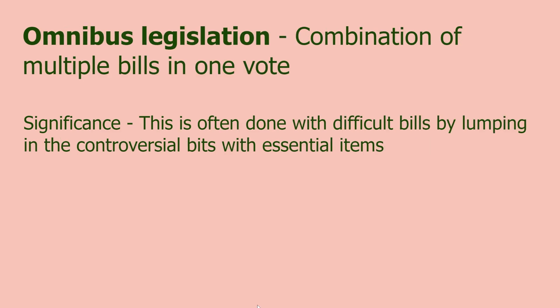Omnibus legislation: the combination of multiple bills in one vote. This is often done with difficult bills by lumping in controversial bits with essential items. A party will take bills centered on popular issues and lump in parts of their agenda that are less popular. That's a lot of the talking points you hear now — bills with popular names get individual members of Congress trying to sneak in other items, and opposing sides object to specific parts. This is what delays bills from getting passed when people are nitpicking things they want out or trying to sneak things in.